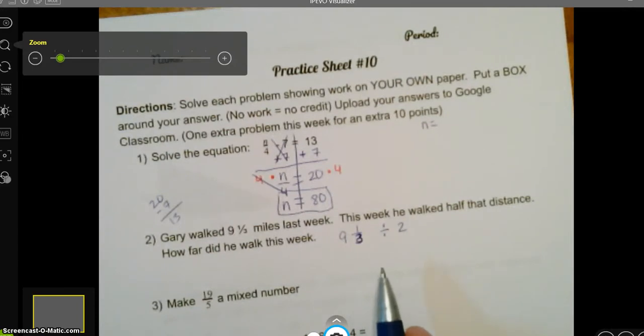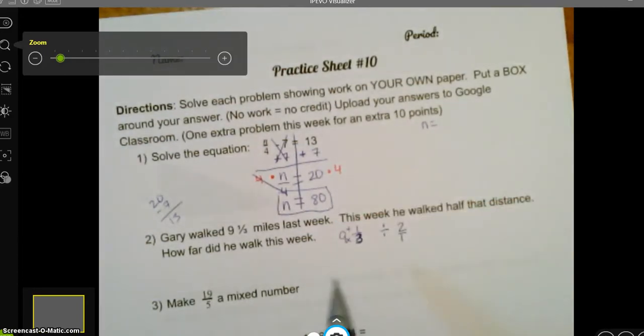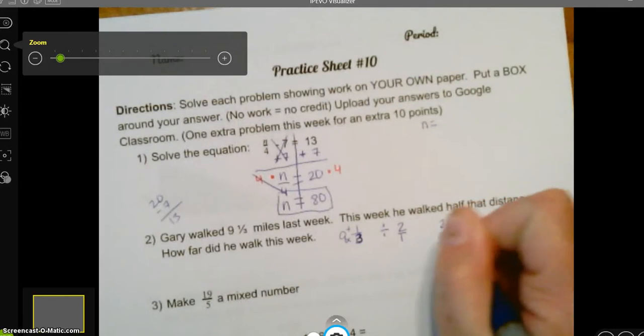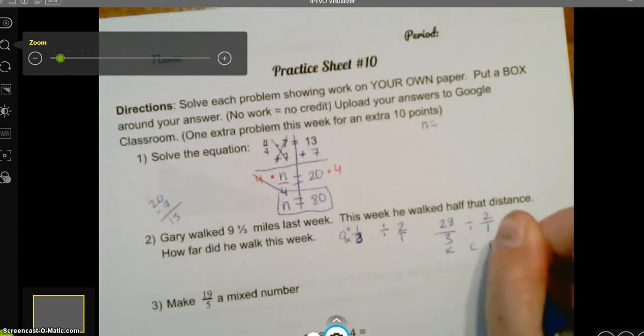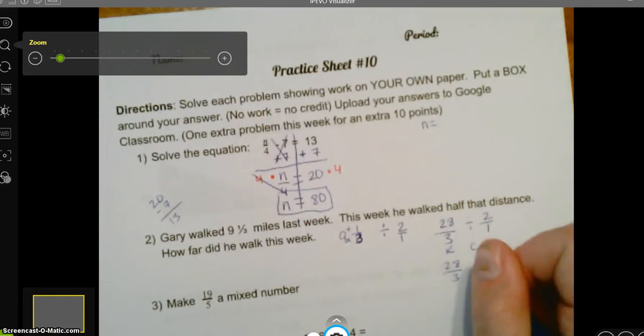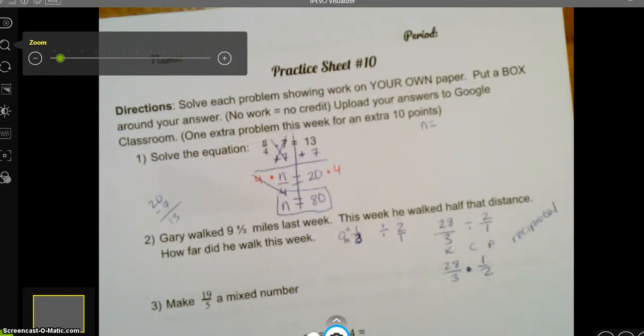So remember, since we're dealing with fractions here, we want to make sure this is improper. So Texas. So what's 3 times 9 plus 1? 3 times 9, 27, plus 1 is 28, over 3. So that's improper. Divide by 2 over 1. And remember, we do keep, change, flip. Keep, 28 over 3, flip. That was our change. And flip, and our special word for flip, of course, is reciprocal. I'm going to write that out here just as a reminder. Reciprocal.